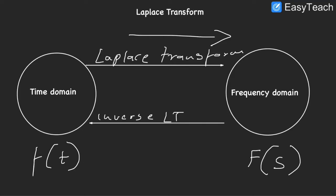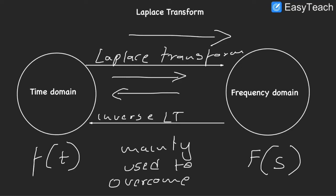So basically what it means is if I have a certain function in my time domain which is too complex to work on or to do any operations on, I am just going to use my Laplace transform. And then once all the operations are done, I'm going to bring it back to my time domain. So this is mainly used to overcome difficult equations or solving difficult equations.